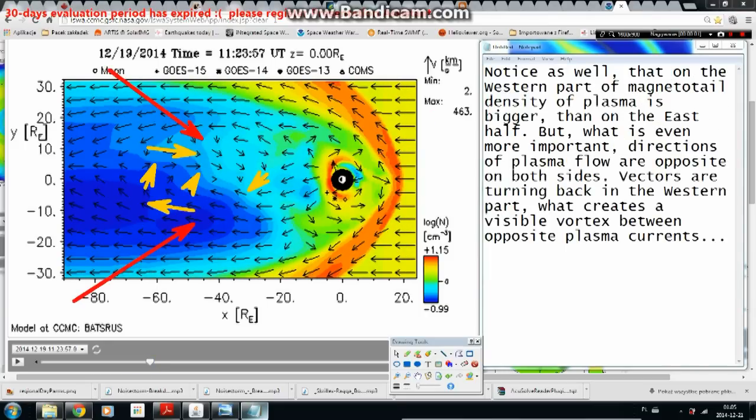Notice as well that on the western part of magnetotail density of plasma is bigger than on the east half. But what is even more important, directions of plasma flow are opposite on both sides. Vectors are turning back in the western part what creates a visible vortex between opposite plasma currents.